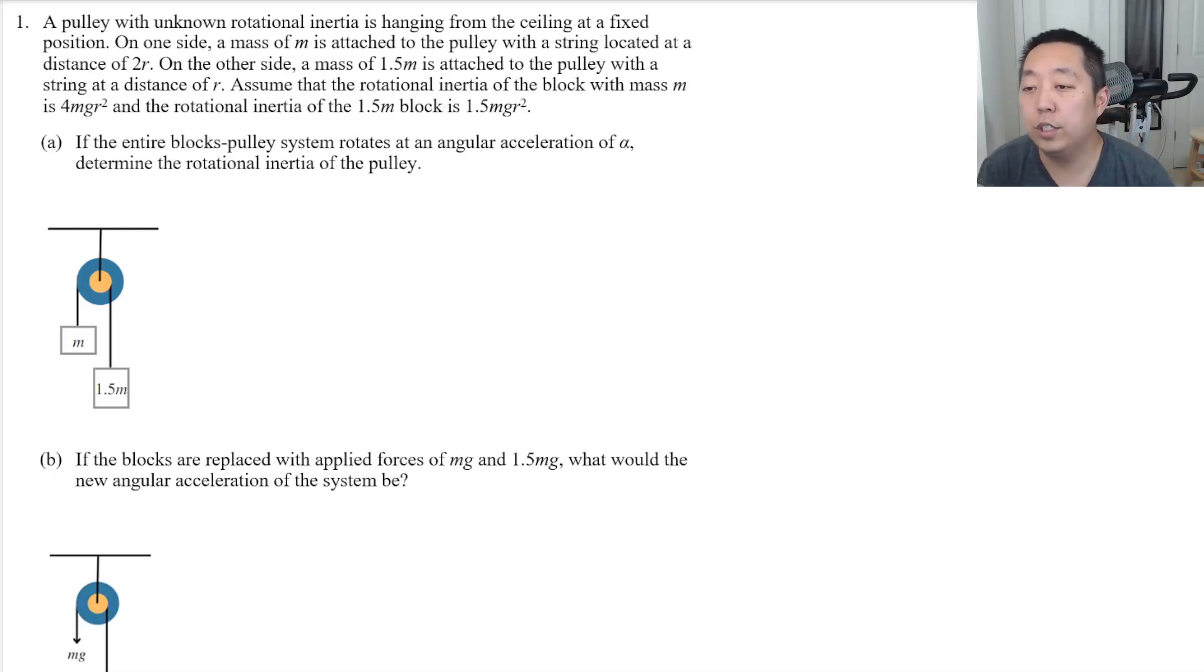A pulley with unknown rotational inertia is hanging from the ceiling at a fixed position. On one side a mass of m is attached to the pulley with a string located at a distance 2r. Let's annotate that on here. This is a distance 2r. And on the other side a mass of 1.5m is attached to the pulley with a string at a distance of little r.